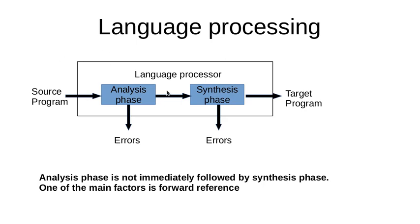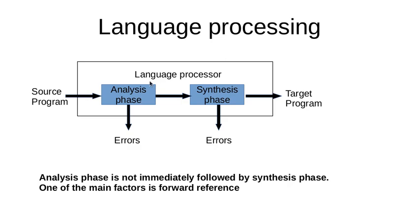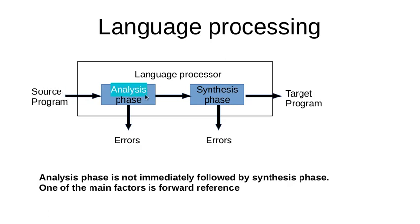Language processing consists of both phases. A language processor, as seen in the block diagram, consists of the analysis phase and the synthesis phase. The source program is given as input to the analysis phase. If there are errors, they are shown. If not, we move on to the synthesis phase, which may also generate errors. If there are no errors, we arrive at the target program — source program as input, target program as output.